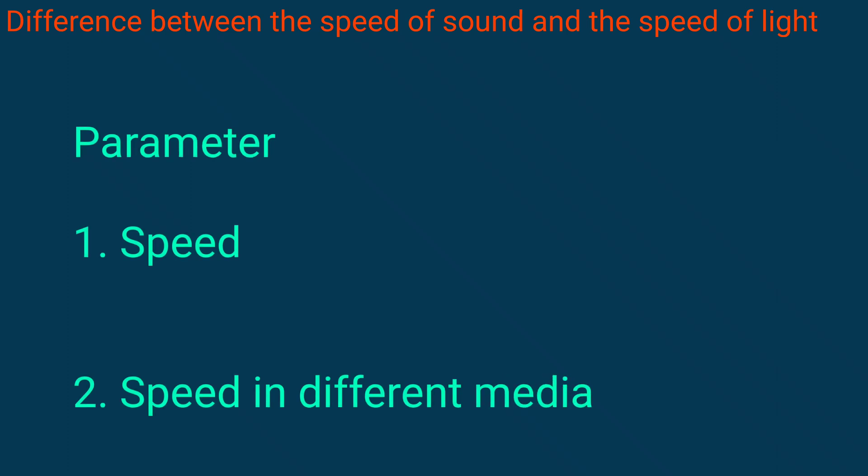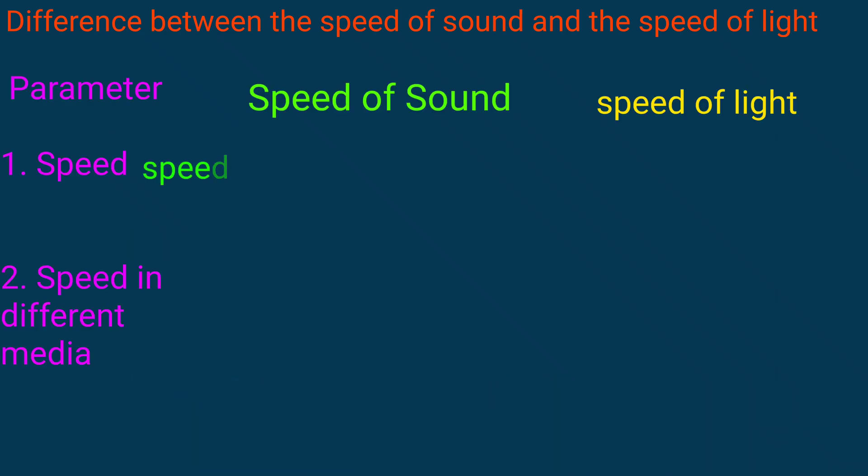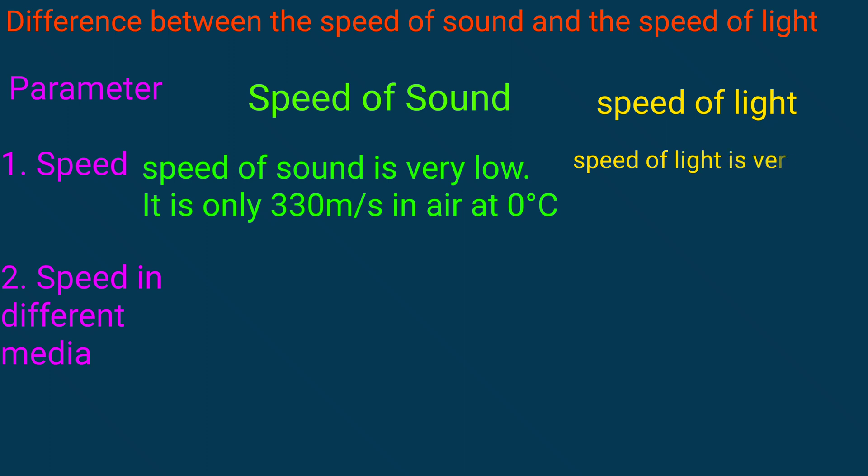Speed of sound is very low - it is only 330 meters per second in air at 0 degrees Celsius. But the speed of light is very high - it is 3×10^8 meters per second in air, and about 10^8 times faster than the speed of sound.